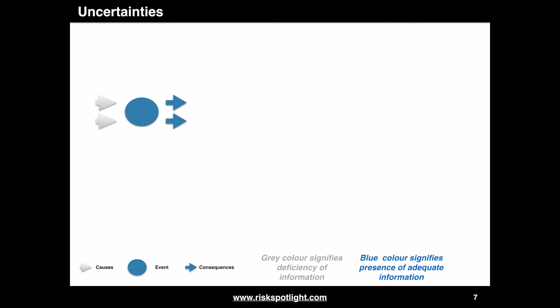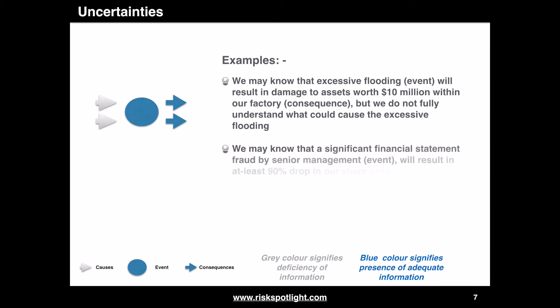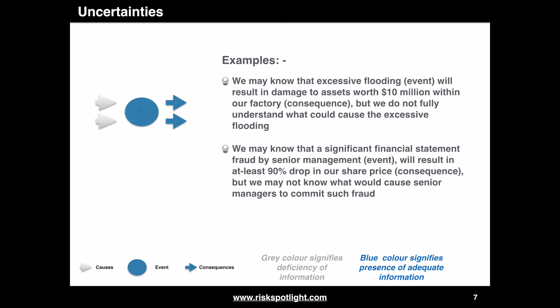In this first variation we cover the situation where we do not have adequate information about the causes but we have adequate information on events and consequences. For example, we may know that excessive flooding will result in damage to assets worth 10 million dollars within our factory, but we do not fully understand what could cause the excessive flooding. Similarly, we may know that significant financial statement fraud by senior management will result in at least a 90% drop in our share price, but we may not know what would cause senior managers to commit such fraud.